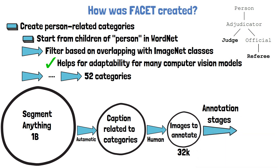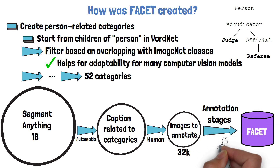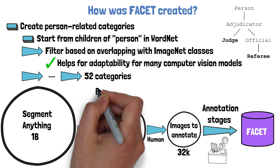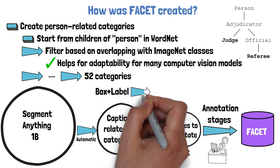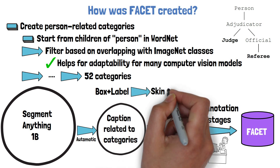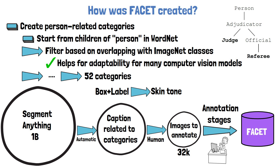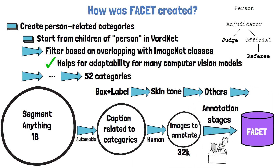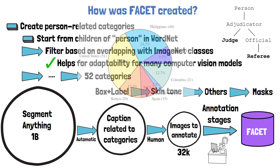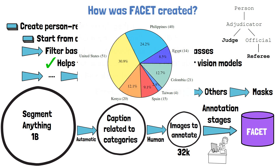After a few annotation stages, we get the Facet dataset, where all annotation stages are done by humans. These include first creating the bounding boxes and labeling each box with one of the 52 categories. Then there is a dedicated step to annotate the skin tone, where annotations are aggregated from multiple annotators since they can be impacted by the annotator's own skin tone. Then all other attributes are annotated, and the last step is labeling the masks for object segmentation, where the masks are available since the images are taken from the Segment NSE dataset. To increase the diversity of the annotations, the annotators are selected from diverse locations, as shown in a chart in the paper.